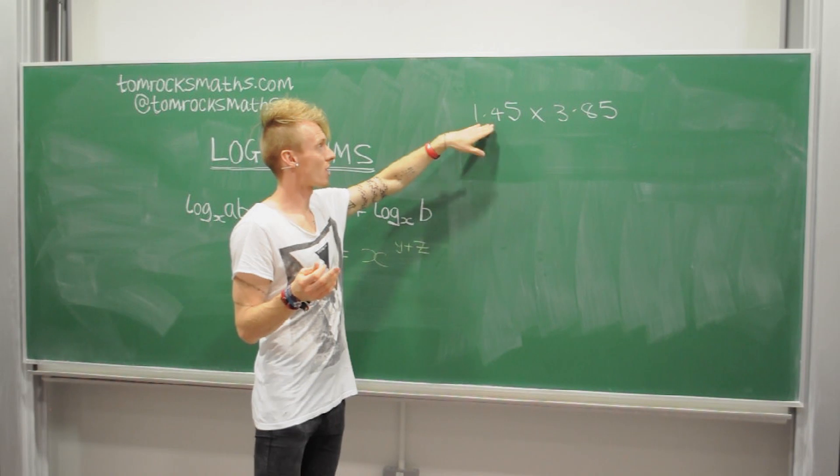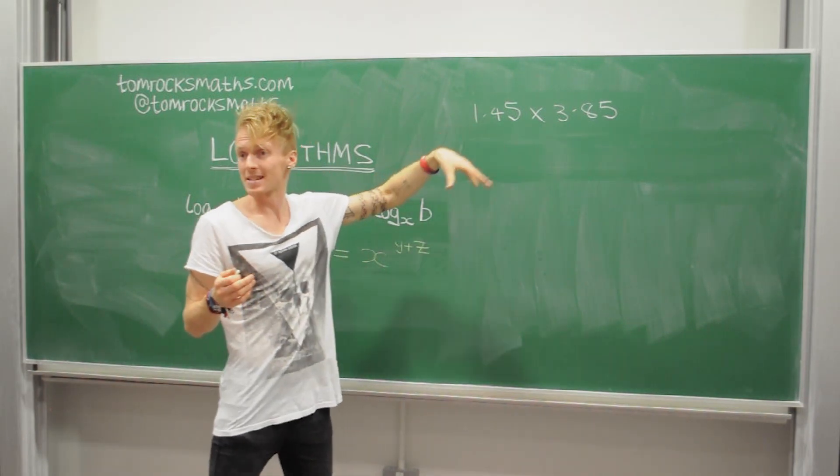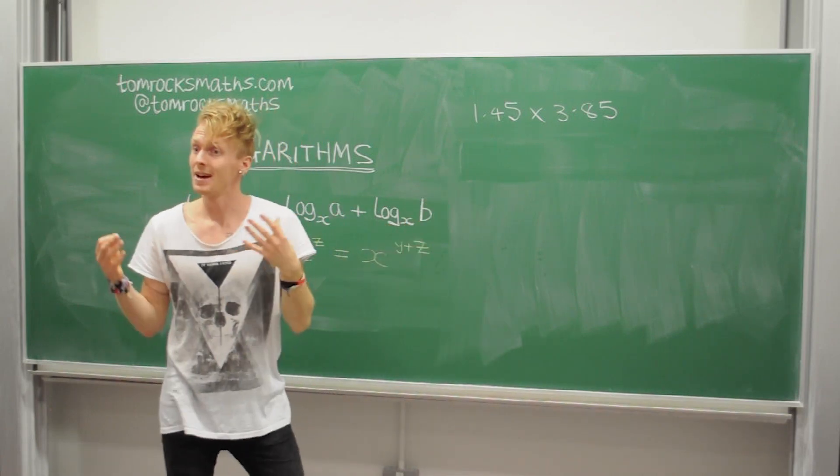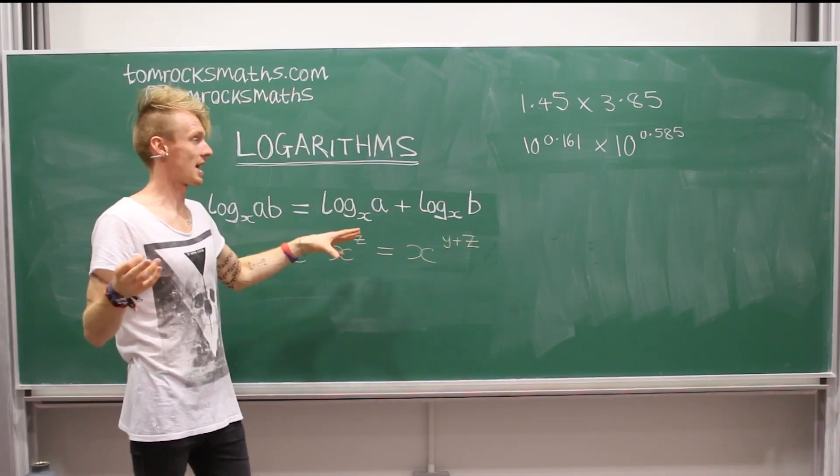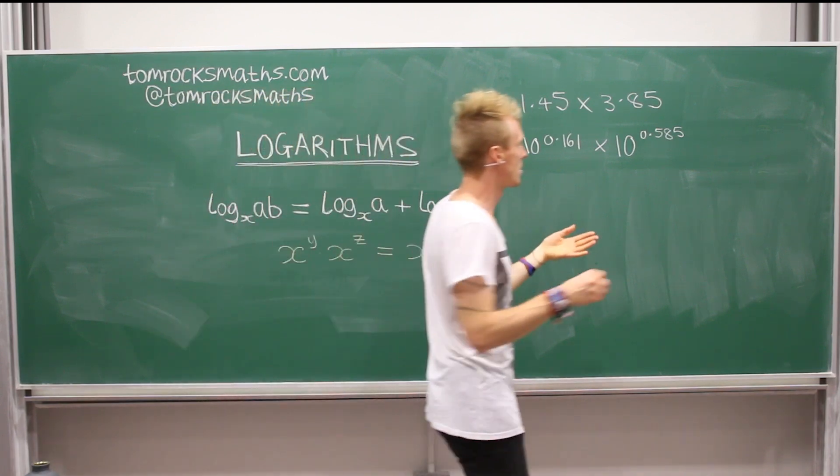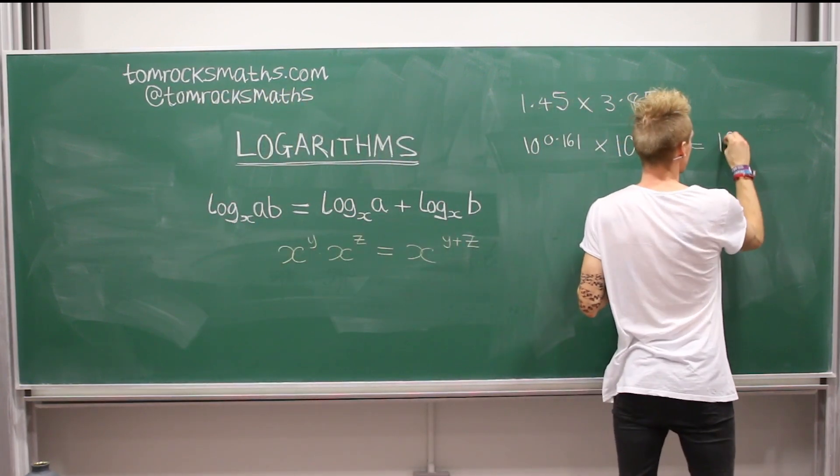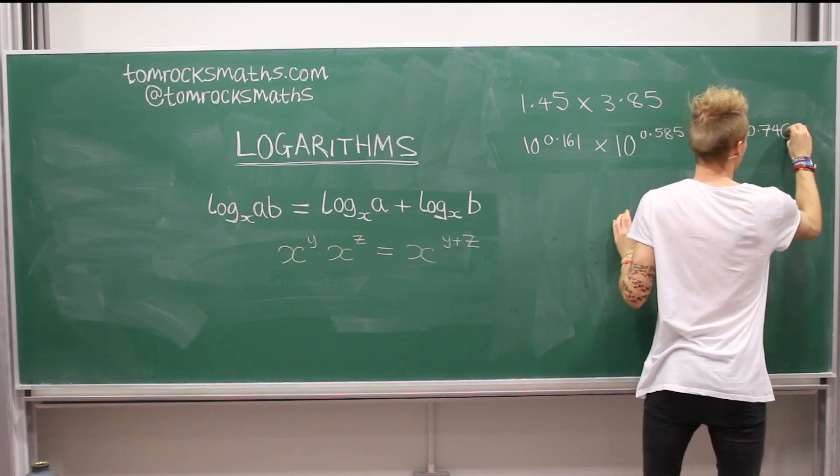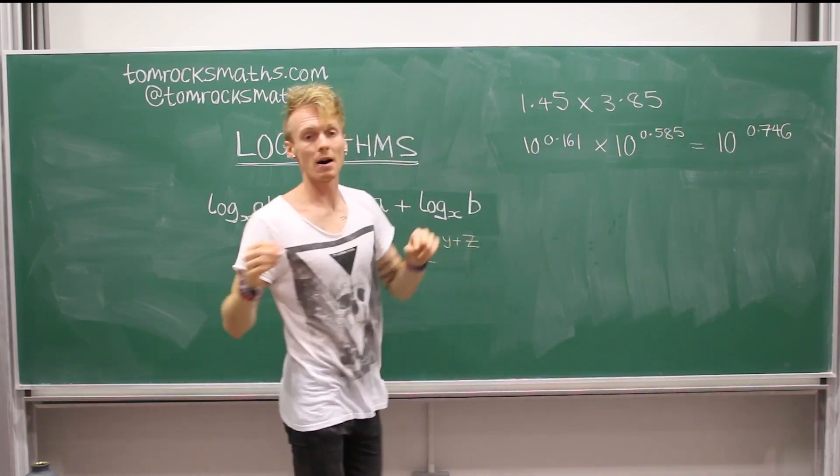And what we want to do is write 1.45 as a power of 10 and write 3.85 as a power of 10. And so using this now, we know what the answer is. It's just 10 to the power of the sum of the two powers, which is 0.746. So you can just add the two powers together.